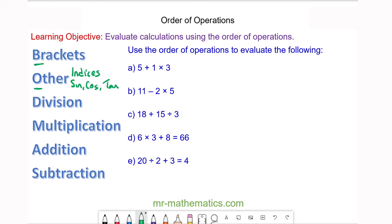If you look at question a, we have 5 + 1 × 3. Because the multiplication comes before the addition, we do the 1 × 3 first. So we have 5 + 1 × 3, which is 3, and 5 + 3 is 8.